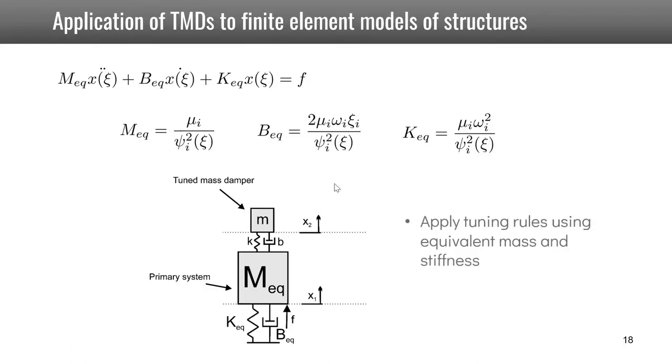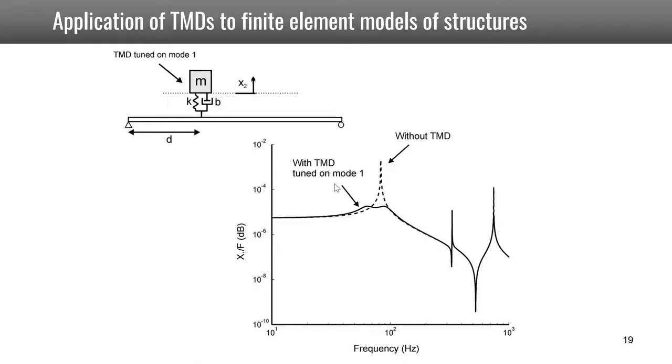Once these parameters are known, it is possible to apply the analytical rules given previously to tune the tuned mass damper. Let's illustrate the example here. We have tuned a tuned mass damper at this location on the beam, and we have tuned it to the first mode. We see clearly the effect of the tuned mass damper on the first mode with the optimum damping, with two peaks with equal heights. You also see that the two other resonances at higher natural frequencies are not affected by the TMD. So TMDs have a very narrow band efficiency; they act only on a single mode.